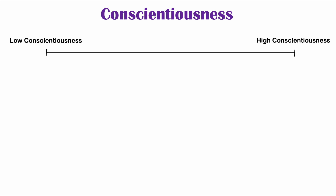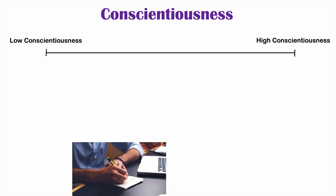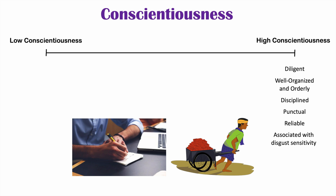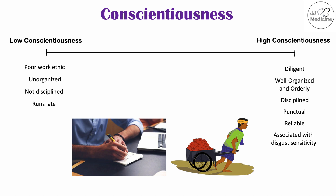Now let's talk about conscientiousness. An individual can fall anywhere from low to high conscientiousness. Those high in conscientiousness are diligent, hard-working, well-organized, disciplined, and punctual — they're considered reliable. Interestingly, conscientiousness is associated with disgust sensitivity; higher conscientiousness individuals are more easily disgusted by certain stimuli. Low conscientiousness individuals tend to have a poor work ethic, be unorganized, undisciplined, run late, and may be considered unreliable.